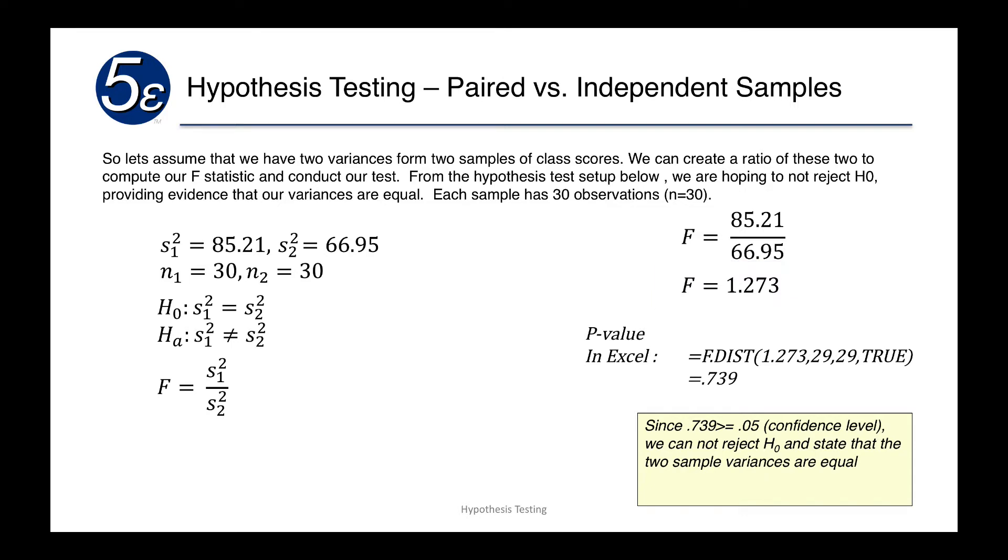We will then use the function in Excel called FDIST. And FDIST works the same way. It basically will give us the area under the curve to the left using an F-distribution. We put in the number 1.273, but now we have to put in two sets of degrees of freedom: the numerator degrees of freedom and the denominator degrees of freedom. So the numerator degrees of freedom is going to be 29 because it's n minus 1 for the top, and the denominator degrees of freedom will be 29, which is n minus 1 for the bottom.